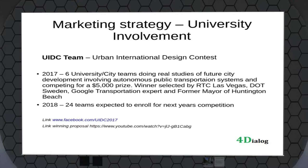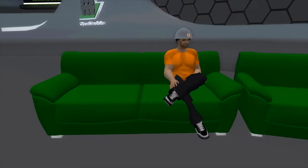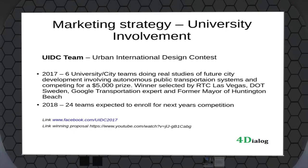The idea is to expand this quite a lot next year — we're looking for 24 teams. It's been very easy to recruit teams so far. We might end up in a situation where we cannot accommodate all who want to participate. The idea is to have 24 teams do different kinds of models together with developers and cities, and present them at the conference in October 2018. There are two links: one for the UIDC Facebook page and one for the winning proposal.